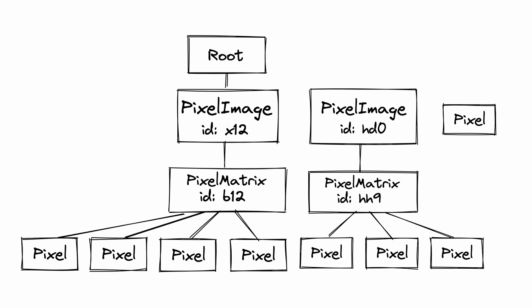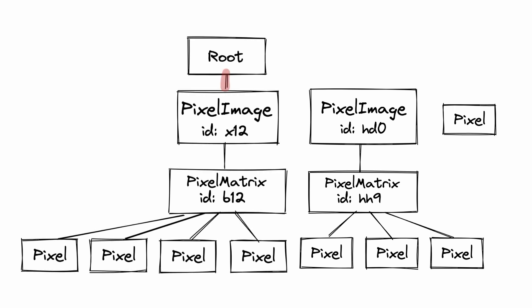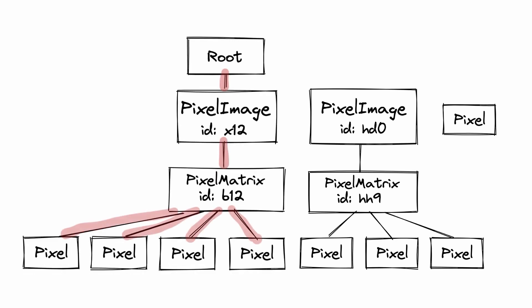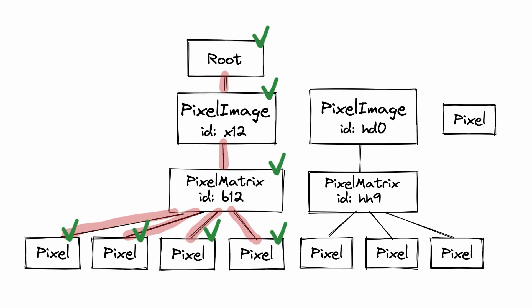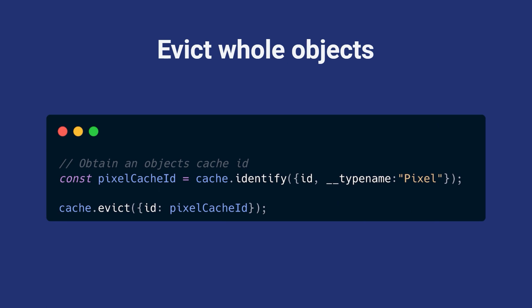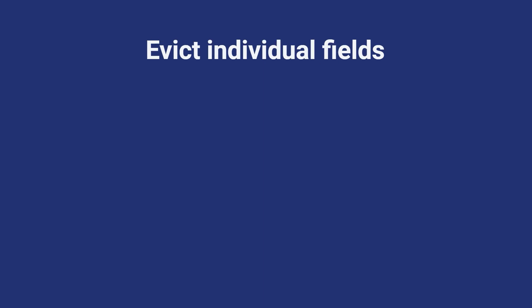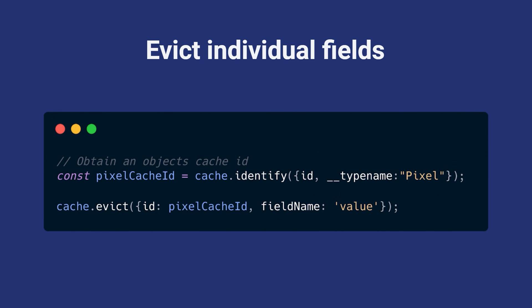And we have all these objects that are not used anymore from the previous query. What the garbage collector does is it traverses the tree of these objects, finding each one, visiting everything it can until it gets to the leaf nodes, marks them as visited. Everything that wasn't visited gets removed. What if we want to evict whole objects? Garbage collection is one thing where they're not reachable — we can get rid of them. But that situation where we delete something with a mutation and it's still in our cache — you can use the eviction API. Just go through and evict an object based on its ID. You could even evict individual fields, though I haven't seen a reason to do it personally.